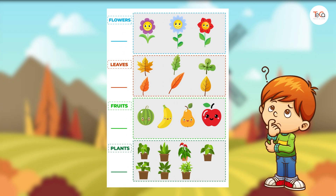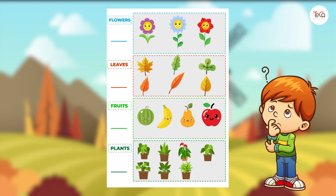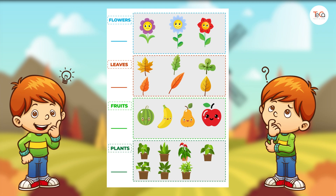Now can you count to find how many objects are in each group? Once you've found it, write it on the line. Have you found it? It's easy, right? There are three flowers, there are six leaves, there are four fruits, and there are seven plants.